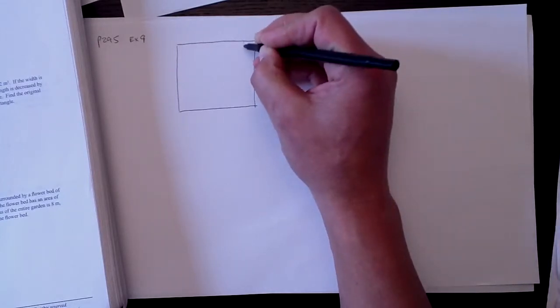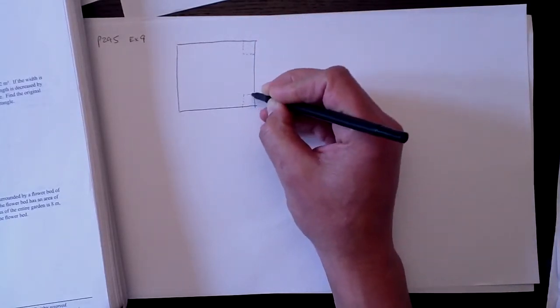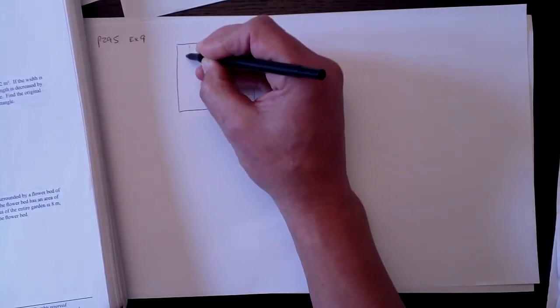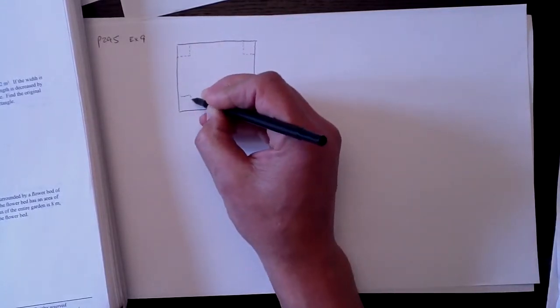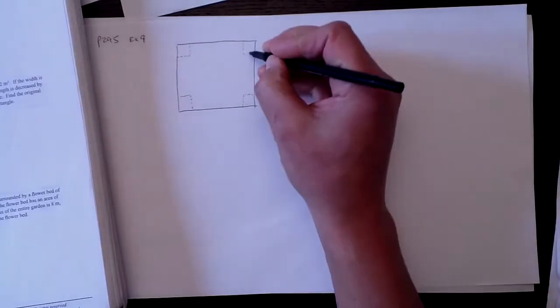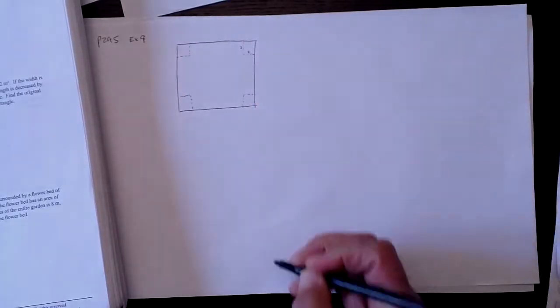And it says we're going to take off 2 cm, we're going to take little 2 cm squares out of here. And once we take those 2 cm squares, I'll just put a little 2 there, a little 2 there to remind us.